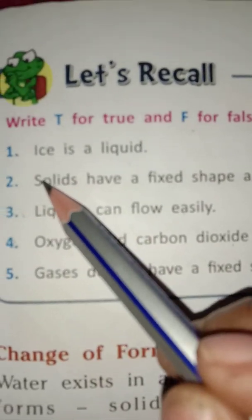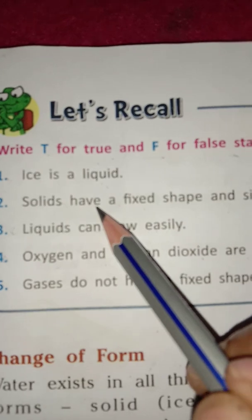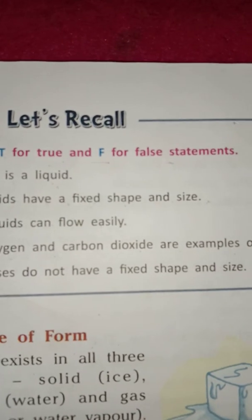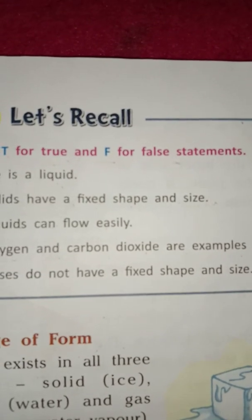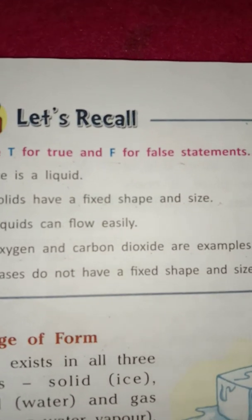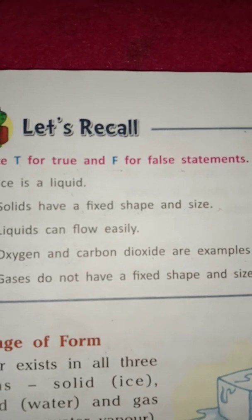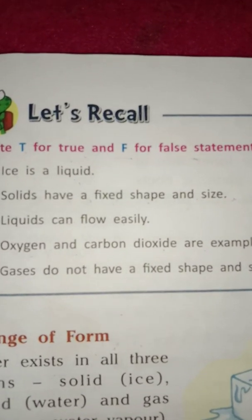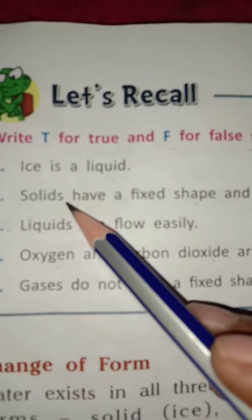The second statement is: solids have a fixed shape and size. Students, you know that things which have a fixed shape and size and do not flow are called solids. Examples of solids are table, chair, pencil, book, pencil box, car, etc. So solids have a fixed shape and size. This statement is true — T-R-U-E. The full spelling of true.